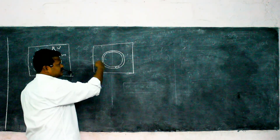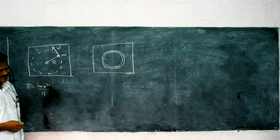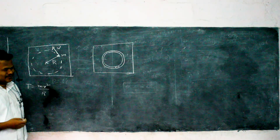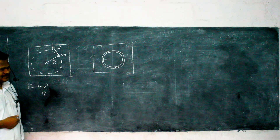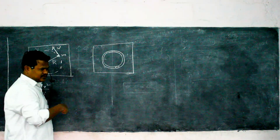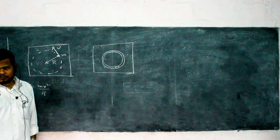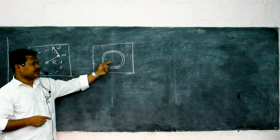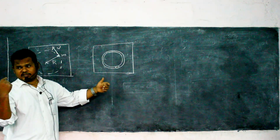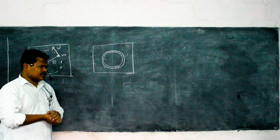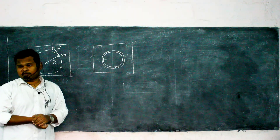In this case, there is no string, so tension does not provide centripetal force. There are two normal reactions: one from the table surface acting upward, and another from the groove walls. The normal reaction from the groove provides the centripetal force.